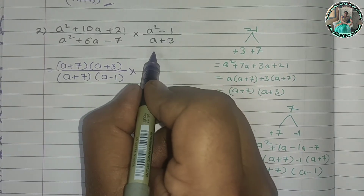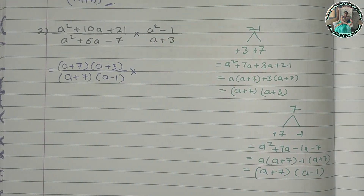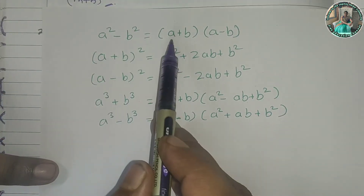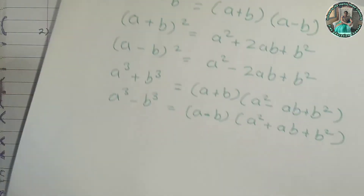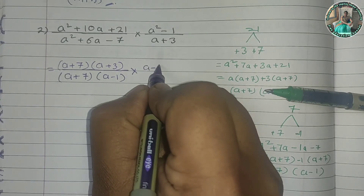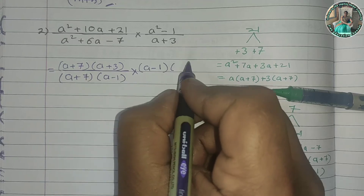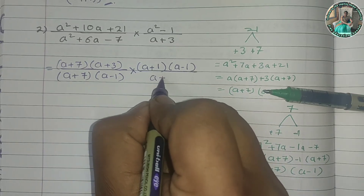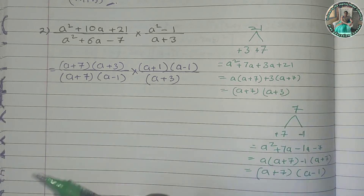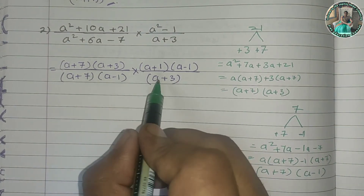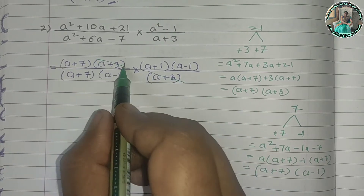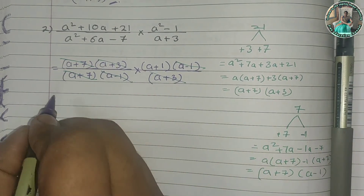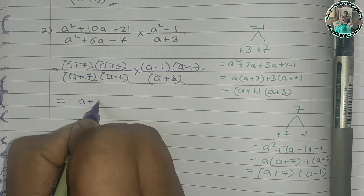For a² − 1, we apply a² − b² formula: (a + 1)(a − 1). The expression becomes (a + 1)(a − 1) upon (a + 3). We have division: (a + 1)(a − 1) with numerator and denominator. After canceling, the remaining answer is (a + 1).